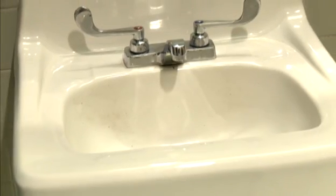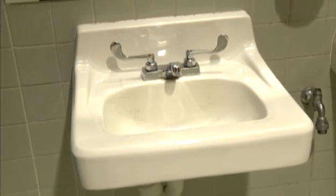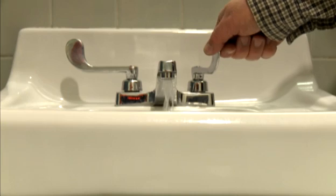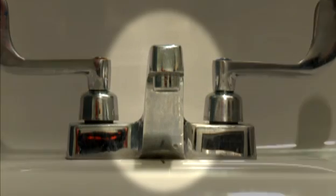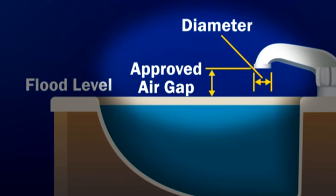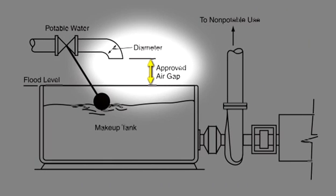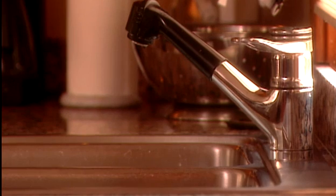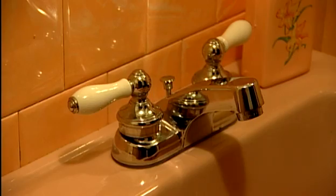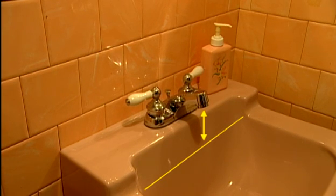Air gap is the most effective way to prevent a cross-connection by providing a separation between a potable water source and a non-potable source, because air disrupts the flow. An air gap is not a device — rather, it is simply physical space. The most common place you see an air gap is in a kitchen and bathroom. There should always be space between the water source and the flood level rim of the receiving vessel.